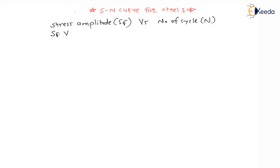The curve is between SF versus N — stress amplitude or fatigue strength versus number of cycles or number of revolutions completed before failure. This curve is plotted on log-log graph paper.